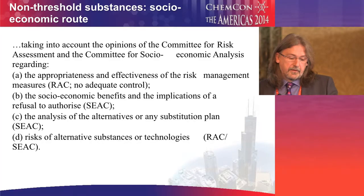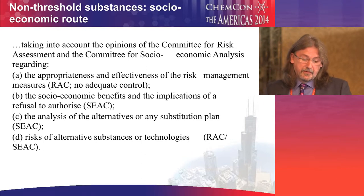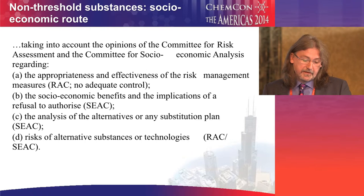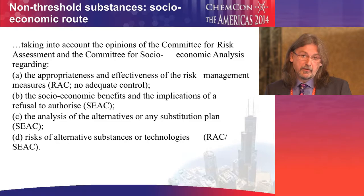The Committee for Risk Assessment and the Socioeconomic Analysis Committee have to look at the appropriateness and effectiveness of the Risk Management Measures, RMMs. In the case of the Risk Assessment Committee, the RAC, we look at whether there's adequate control or no adequate control. The socioeconomic benefits and the implications of a refusal to authorize are looked at by SEAC. Analysis of alternatives and any substitution plan is also looked at by SEAC. And the risks of alternative substances or technologies need to be looked at by both committees.